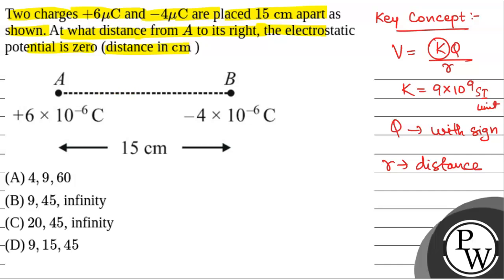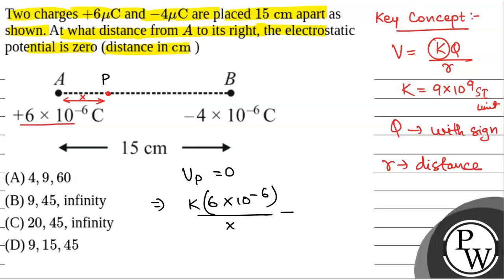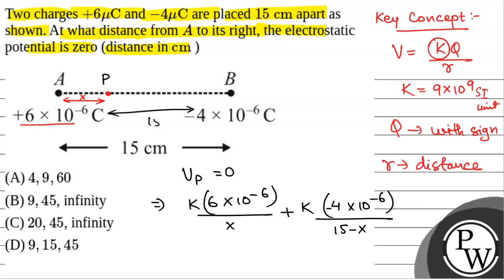We will find the electric potential at a point P at distance X from the charge +6 × 10⁻⁶ coulombs, where V at P equals 0. So V at P equals K × (6 × 10⁻⁶) / X plus K × (−4 × 10⁻⁶) / (15 − X), because the total distance is 15 cm, so from point P it will be 15 − X. This is set equal to 0.